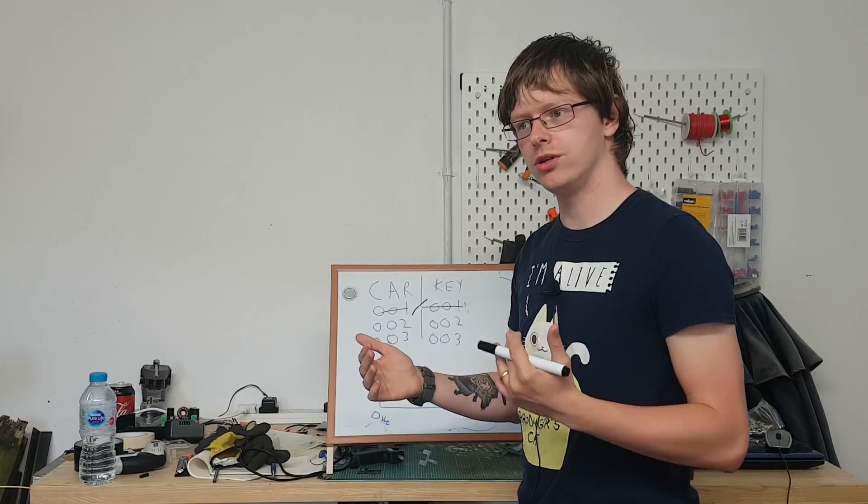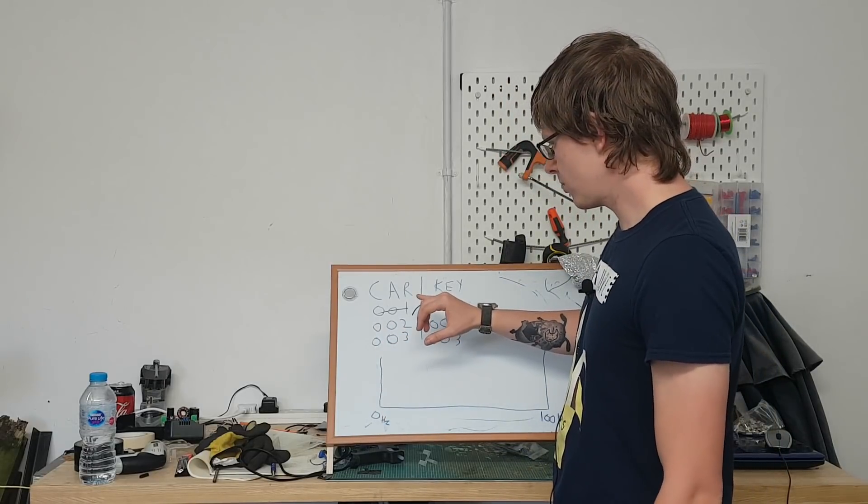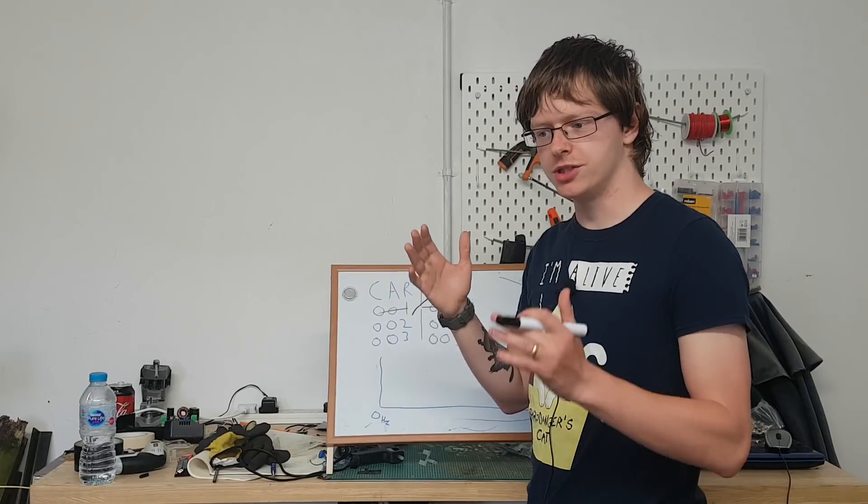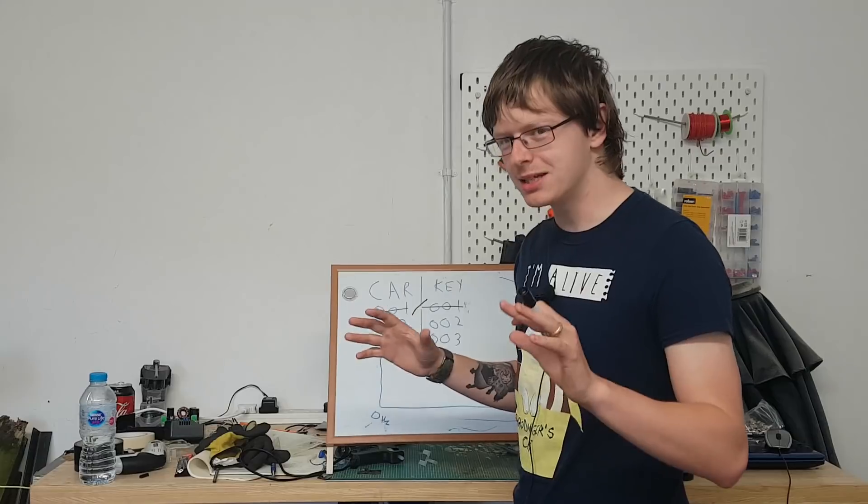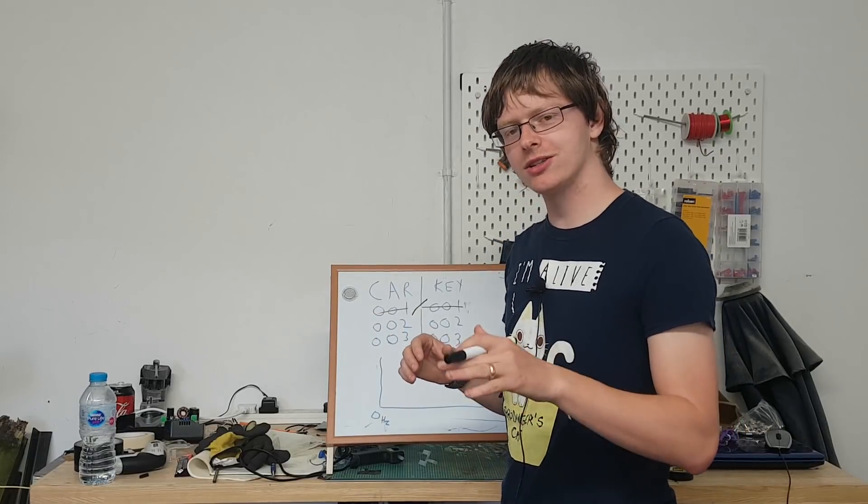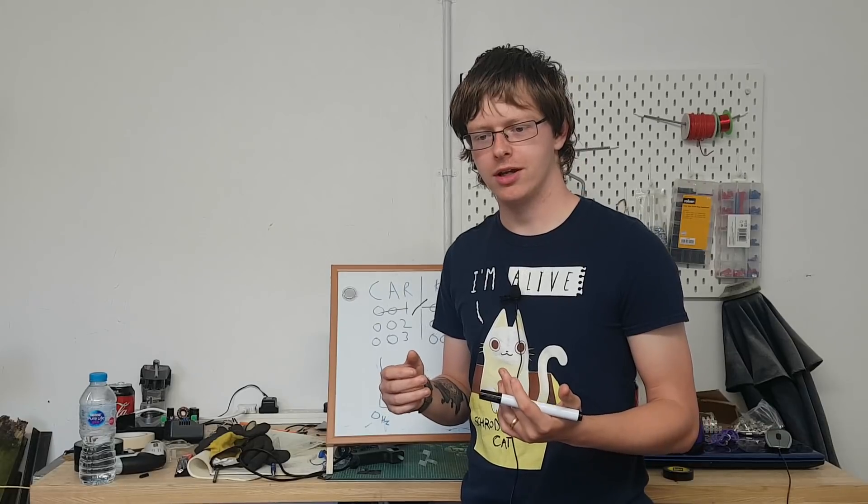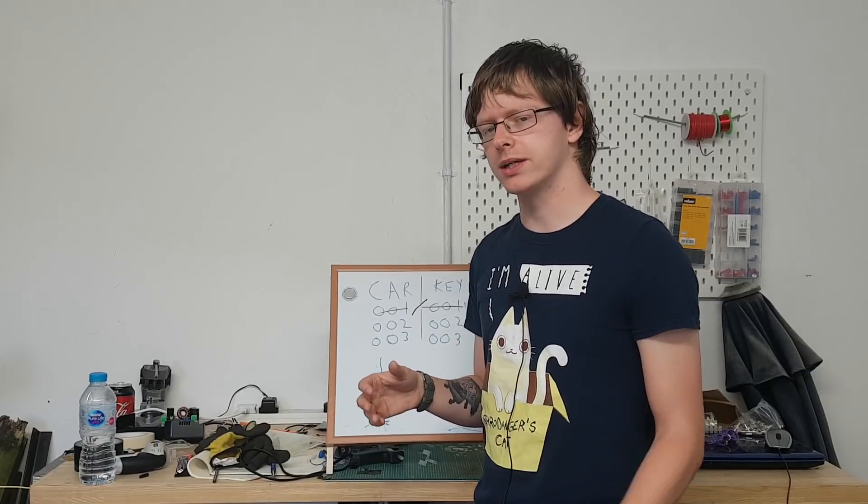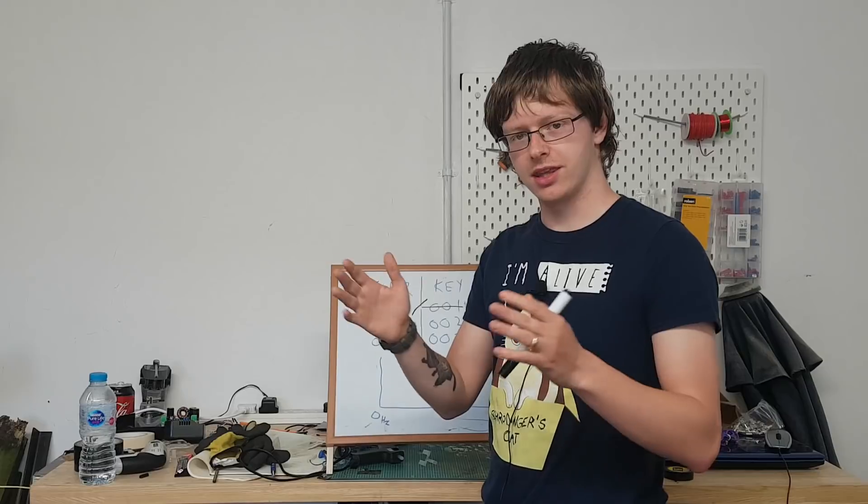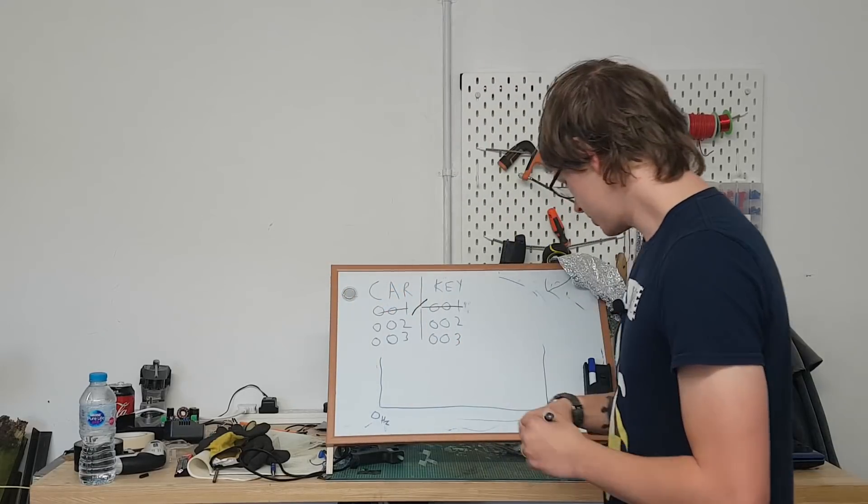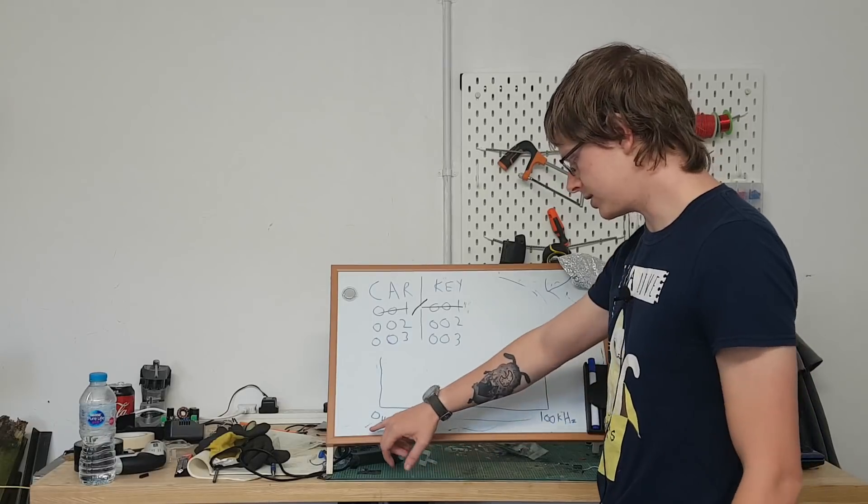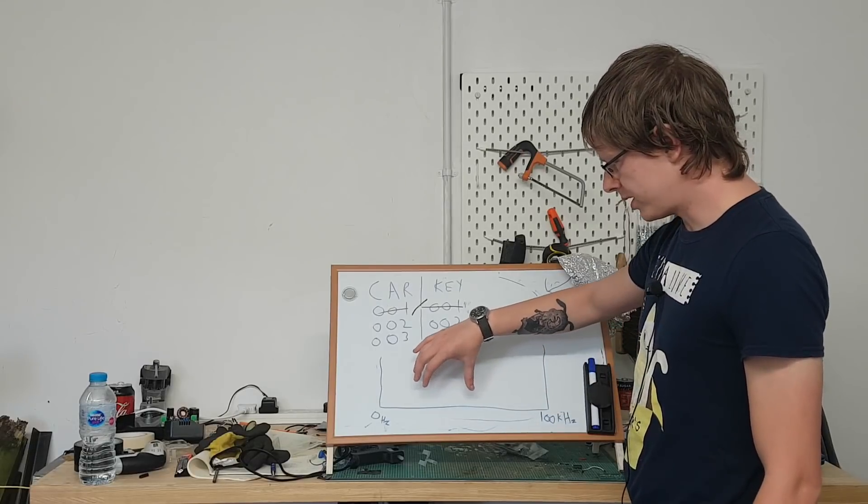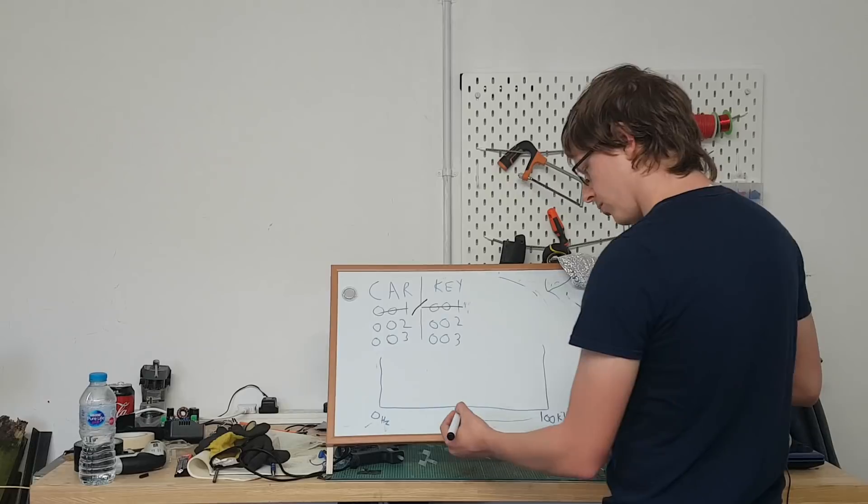So the way that the car listens for signals is using quite a wide bandwidth. I need to briefly talk about bandwidth. It's not the same as what you might think for your internet speeds. Bandwidth is essentially the width of the frequency that it's listening on. So down here as an example I've got this 0 Hertz, 200 kilohertz and what it'll do is a band or a wide bandwidth would go from let's say 1 kilohertz and say it goes to let's say 5 kilohertz.